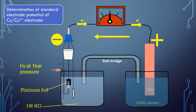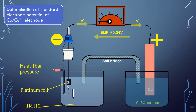Now let us see how the standard electrode potential of the copper electrode is determined. The copper electrode, immersed in a one molar solution of copper sulfate, is connected to the Standard Hydrogen Electrode as shown in the setup. The EMF of the cell comes out to be 0.34 volts. The flow of current indicates that reduction takes place at the copper electrode — the current flows towards the SHE, meaning electrons flow away from it and towards the copper electrode, confirming reduction at the copper electrode. The standard electrode potential of copper is +0.34 V.